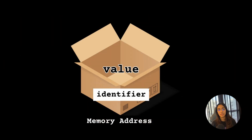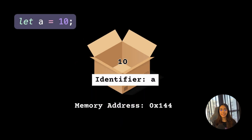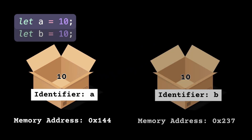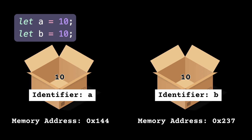In the case of primitive data types, the values are stored directly in that box or at that memory address. For example, let a = 10 — the identifier is 'a', it has some memory address, and the value it holds is 10. Primitive data types hold the value directly at their memory address. If you create another variable let b = 10, a new memory address will be allocated and the identifier b will store the value 10 inside of it.